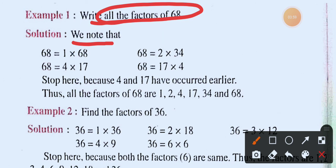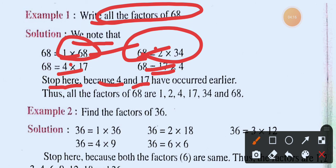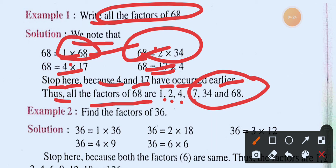Let us find the factors of sixty-eight. We divide: 68 ÷ 1 = 68, 68 ÷ 2 = 34, 68 ÷ 4 = 17. We stop there because four and seventeen have already appeared. Thus the factors of sixty-eight are one, two, four, seventeen, thirty-four, and sixty-eight.